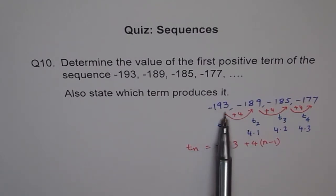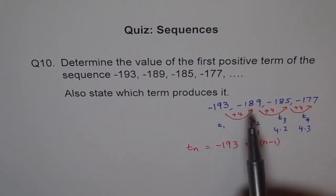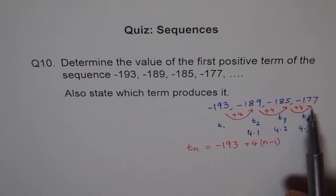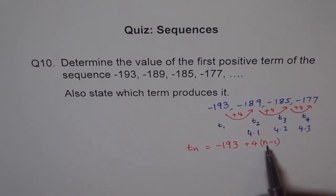So you start at this and then you keep on adding 4s. You add one 4 to get to the second term. You add two 4s to get to the third term. Three 4s to get to the fourth term. That means, number of 4s you are adding is 1 less than the term number. So we get N minus 1 fours. And starting at minus 193, that is how you get your general formula.